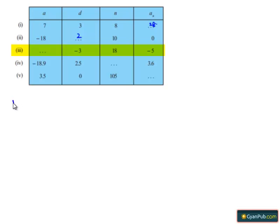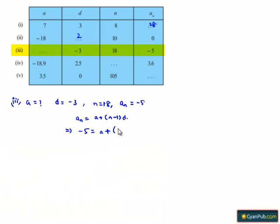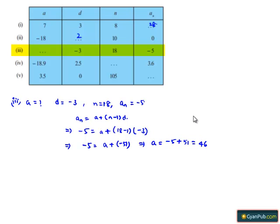Moving on to the third blank: d is given as −3, n is given as 18, and aₙ is given as −5. We need to find a. Using aₙ = a + (n−1) × d: −5 = a + (18−1) × (−3), so −5 = a + 17 × (−3) = a − 51, which gives a = −5 + 51 = 46. Therefore, a is equal to 46 and the blank is filled with 46.